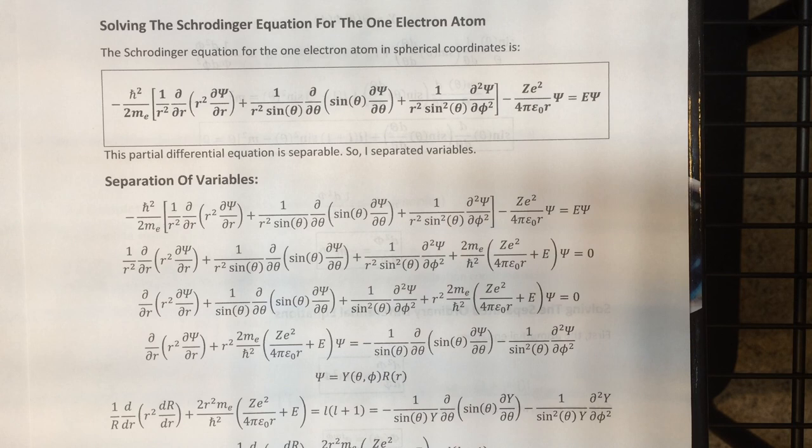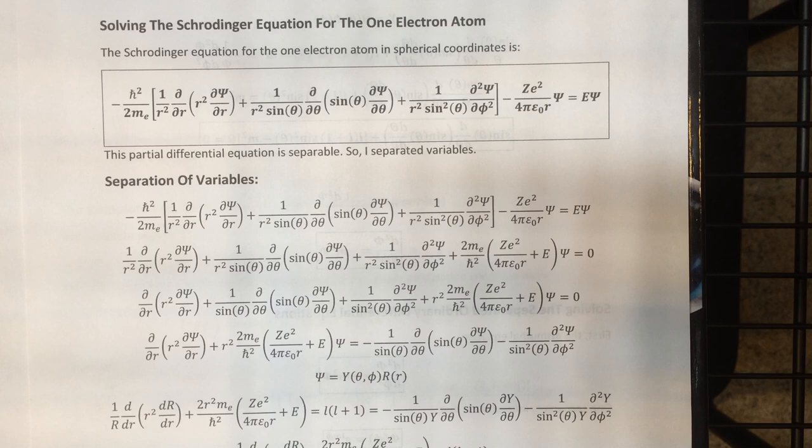You get the equation by inserting the Coulomb potential for the potential function, making sure the sign is right to make it attractive, and then sticking the Laplacian in spherical coordinates into the equation. You get the full Schrödinger equation for the hydrogen atom or the one-electron atom in spherical coordinates, which turns out to be a separable partial differential equation.